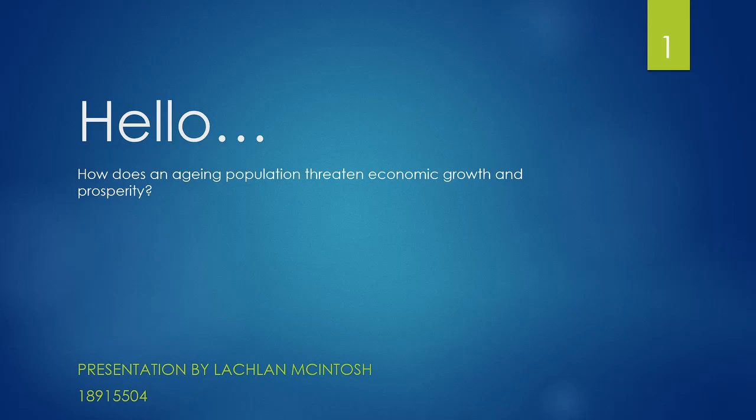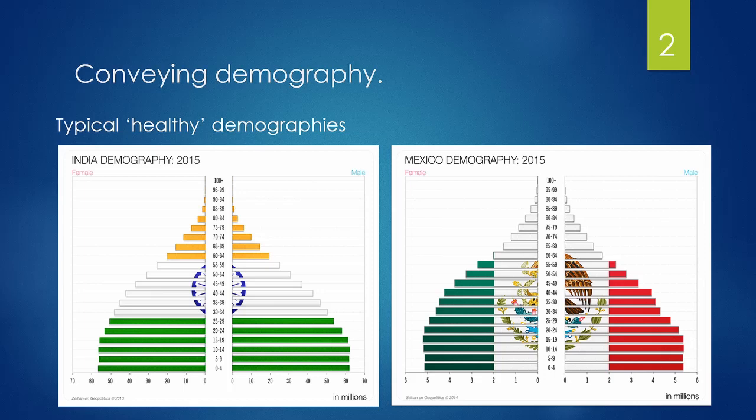The most common way to portray a nation's demography is through what's called a population pyramid. Here are some examples of a typical healthy demography: young people at the bottom, middle-aged people in the middle, and elderly at the top. Simple mortality makes this a pyramid.